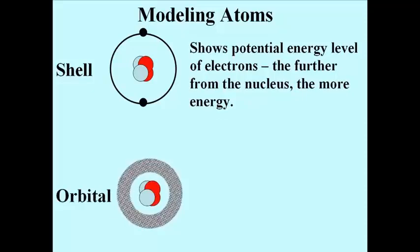The orbital model emphasizes the space occupied by electrons around the nucleus. Each orbital can contain 0 or 1 or 2 electrons. You might recall that more than 1 orbital may contain electrons at the same energy level.